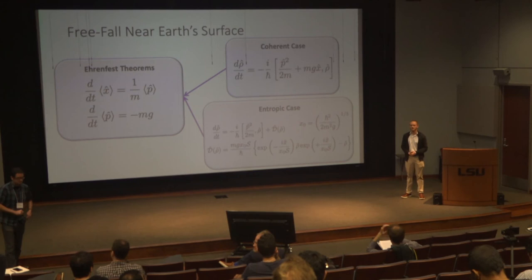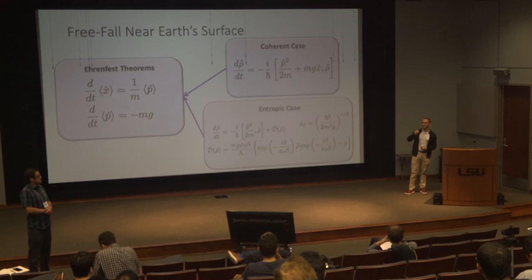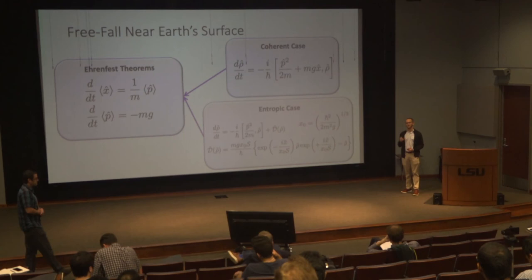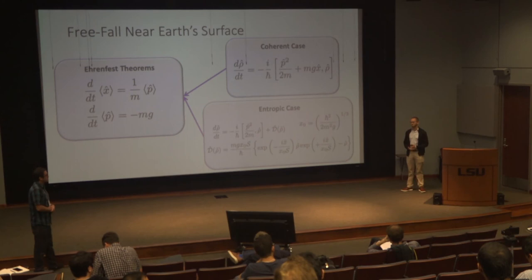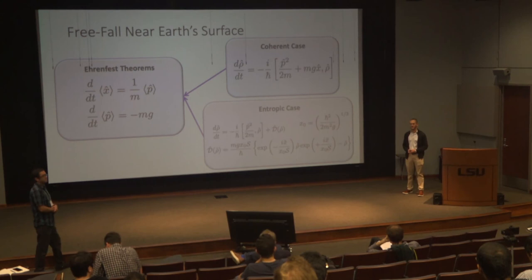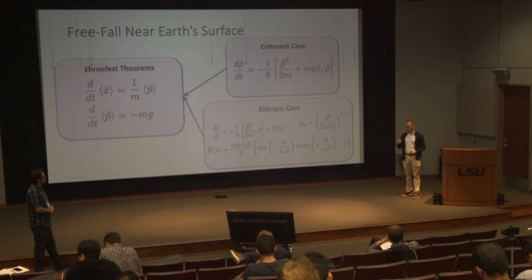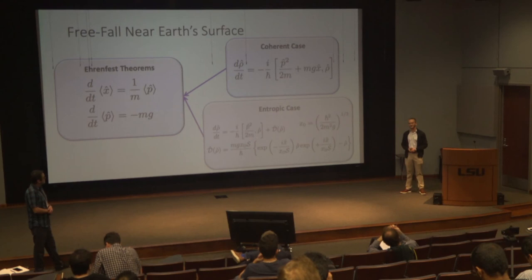Q: What temperature is the experiment carried out at? A: The neutrons are at the scale of picoelectron volts in terms of energy levels. Q: How are the neutrons interacting with the mirror — how does the boundary work? A: I believe the boundary was selected experimentally to be as close to a perfectly elastic collision as possible, but that's all I know.